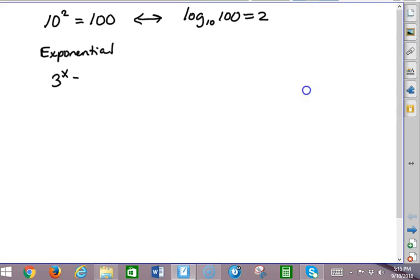3 to the x equals 10. Notice that the x is in the exponent position. I need to solve for x. How do I get the x out of the exponent position so that I can do something with it, so that I can figure out what it equals? The only way to get it out of the exponent position and in a position that I can solve for it is to use logs. There's two ways I can do this. Number one,